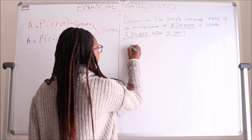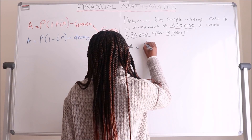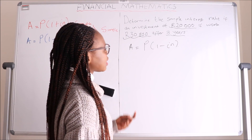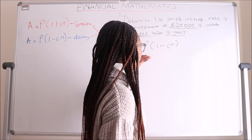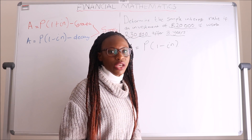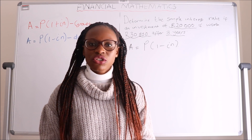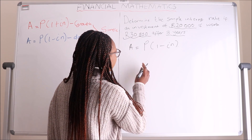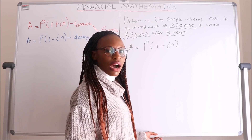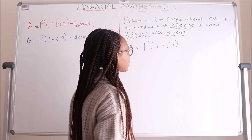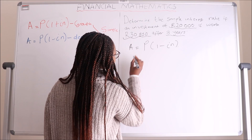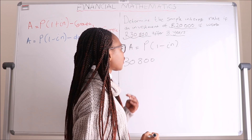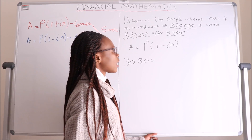After choosing the equation — A equals P times one plus IN — you can make I the subject of the formula first, or substitute the values and then make I the subject at the end. Either way it works. Substituting into the equation: our A is thirty thousand eight hundred, which is the final amount this person receives after three years — ten thousand eight hundred more than the original investment.